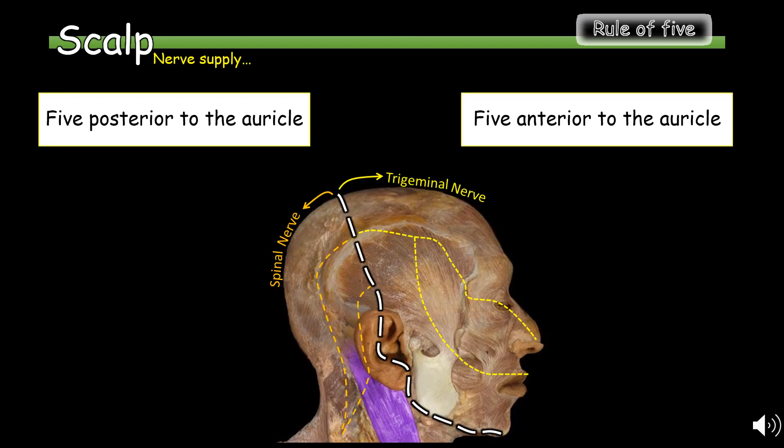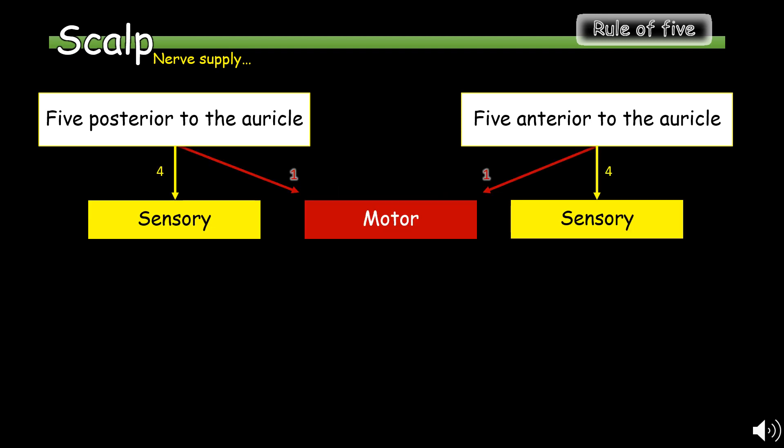Next we will discuss the scalp's innervation. There are five nerves posterior to the auricle, which are spinal nerves, and five anterior to the auricle, which are trigeminal nerves. For both groups, there are four sensory and one motor nerve, for a total of five in each respective region.